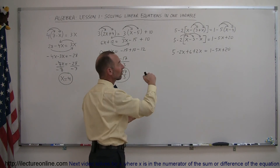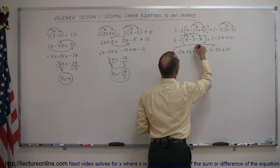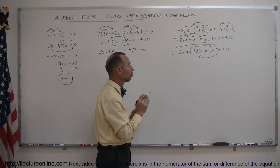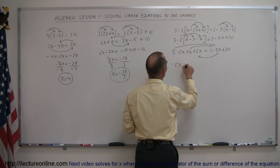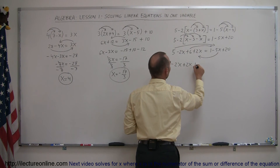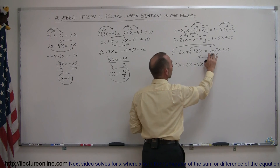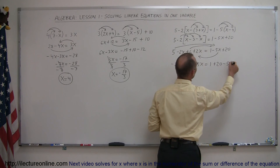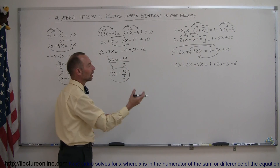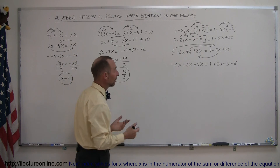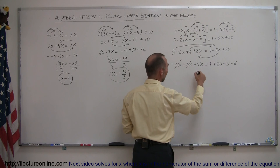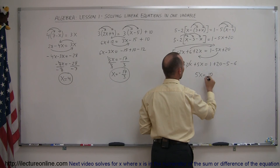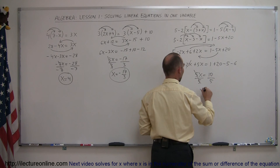Now we move all the terms with x to one side and everything else to the other side. The 5 moves to the right, the plus 6 moves to the right, and the minus 5x moves to the left — remembering that whenever we move something across the equal sign, the sign changes. So we have minus 2x plus 2x, and the minus 5x moves across becoming plus 5x, equals on the right side 1 and 20 already there, but the 5 becomes minus 5 and the plus 6 becomes minus 6. The minus 2x and plus 2x cancel out, leaving 5x on the left, and on the right 20 minus 5 minus 6 plus 1 equals 10. Dividing both sides by 5, we have x equals 2.